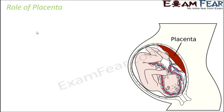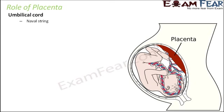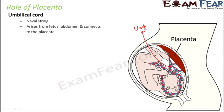This placenta and umbilical cord keep the baby always connected to the mother, and through this all the nutrients come into the fetal body. Now let us look at the role of placenta. In this picture you can see the umbilical cord, which starts from the abdomen of the fetus and connects to the placenta — the structure formed from the wall of the uterus. The umbilical cord is nothing but a navel string; it arises from the fetus abdomen and connects to the placenta.